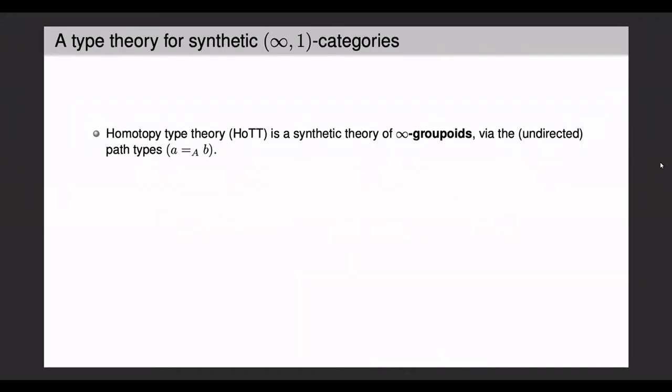We're interested in a type theory for synthetic infinity categories and its metatheoretic properties. The mathematical motivation for this comes from the following circumstance. So homotopy type theory, or HoTT, is a synthetic theory of infinity groupoids because we can reason about the undirected path types or types of identifications between points in a type.